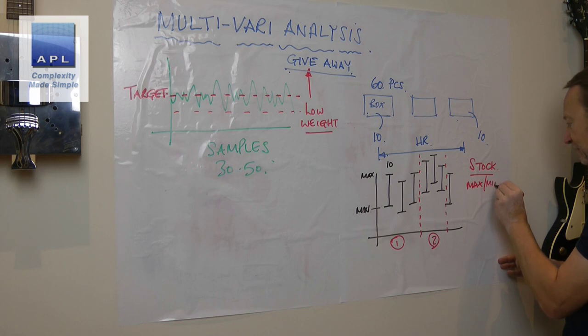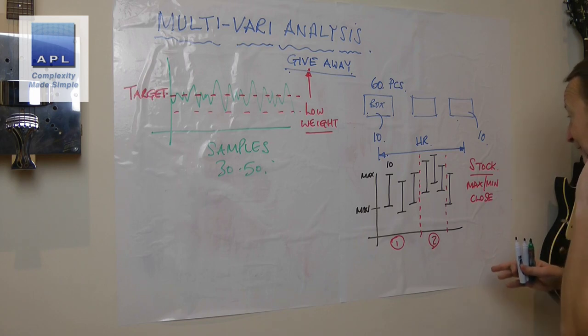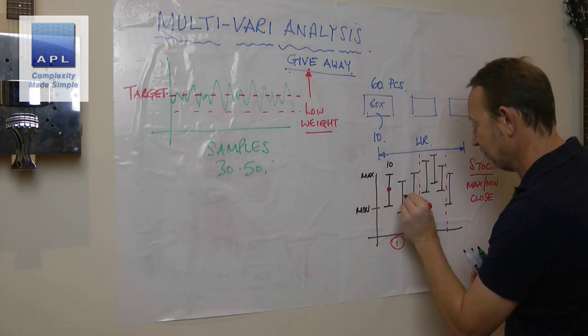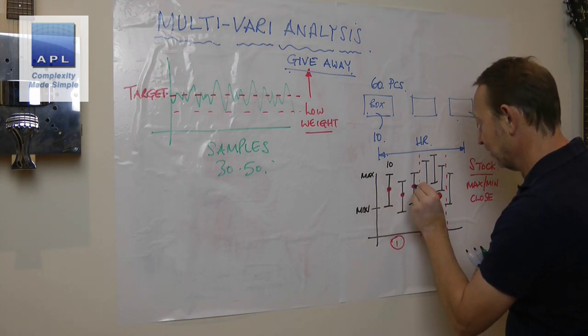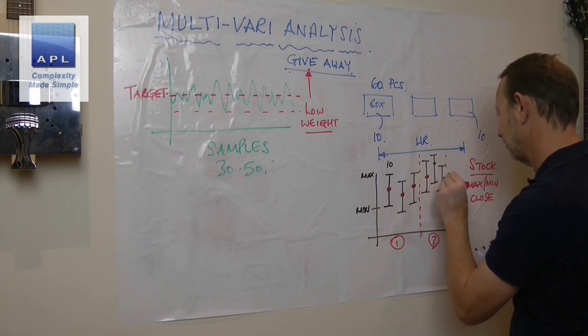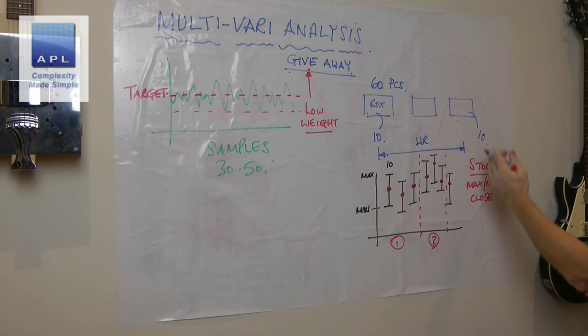Now you can get this graph by using what's known as a stock graph. So if you look in Excel, look up the stock graph. There is a max-min-close graph. If you want to populate the close data, work out the average, so you'll end up with a blob in the middle like this, which is the average.